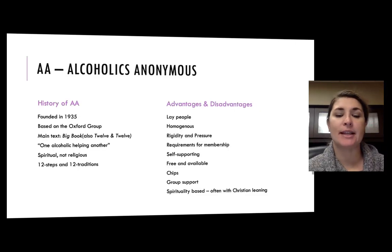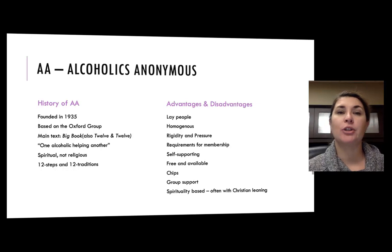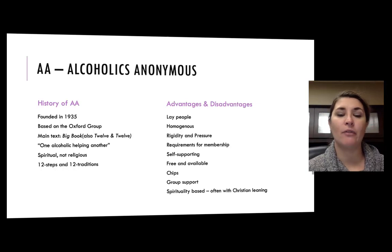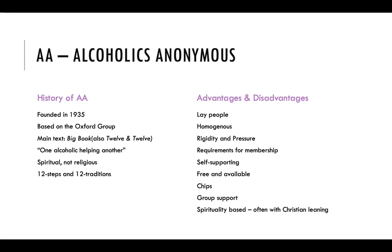AA is one of the most well-known self-help groups, particularly for the addiction and recovery community. AA was founded in 1935 and was based on the Oxford Group, a religious movement popular in the US and Europe. The Oxford Group practiced the formula of self-improvement by performing self-inventory, admitting their wrongs and making amends, and using prayer and meditation. Roland H went to a psychoanalyst for help with his alcoholism and was told that the only relief he would find was through spiritual experience and was sent to the Oxford Group. While working with the Oxford Group, he and several other men were able to abstain by practicing the Oxford Principles. This was the start and the roots of AA.